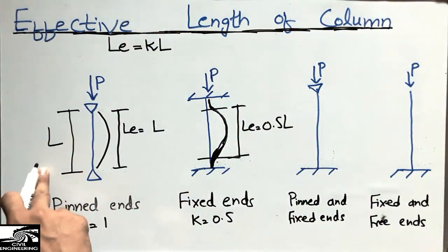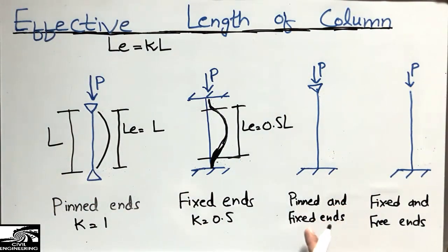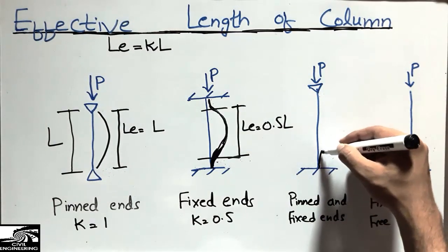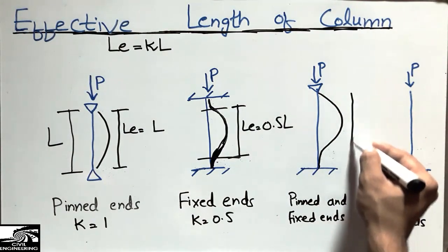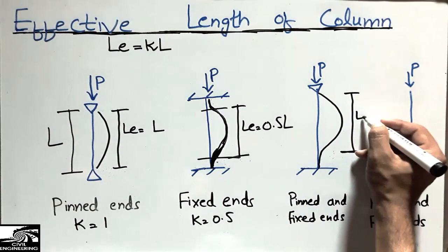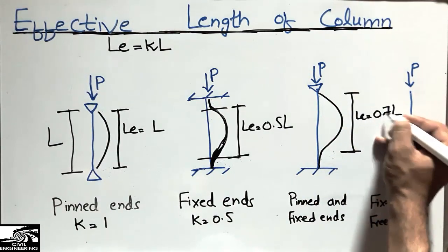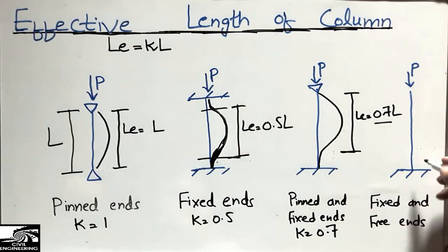In the case of one fixed end and one pin end, the fixed end will not move but the column will deflect. The effective length in this case is 0.7L, and the K value is 0.7.